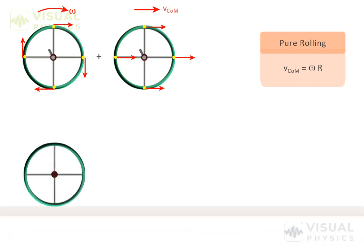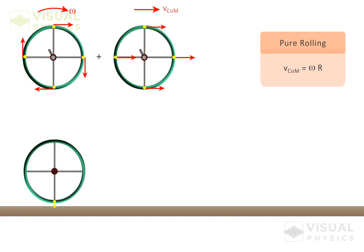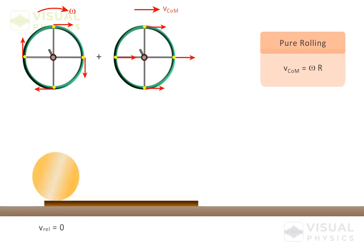Here you must note that this argument has arrived from the fact that the relative velocity of the point of contact with respect to the surface over which it rolls is zero. So we can say that if the object rolls without slipping over a moving surface, then the instantaneous velocity of the point of contact is equal to the velocity of the surface.